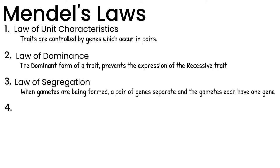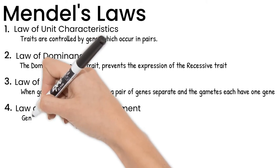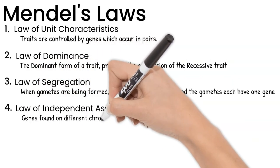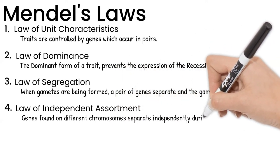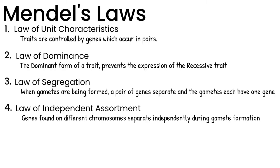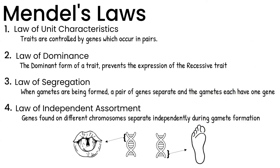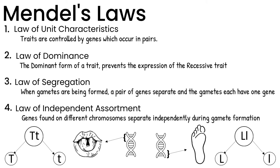Lastly, the law of independent assortment. This law applies to a specific type of genetic cross and will make more sense when we get there. It states that genes found on different chromosomes separate independently during gamete formation. For example, if the gene for rolling your tongue is on chromosome 2 and the gene for a longer second toe is on chromosome 19, they will separate differently during meiosis — just because you can roll your tongue doesn't automatically mean your second toe will be longer. They're separate genes.